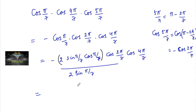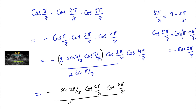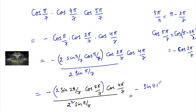Using the identity 2sinθcosθ = sin2θ, we get minus sin(2π/7) · cos(2π/7) · cos(4π/7) divided by 2 sin(π/7). Multiplying and dividing by 2 again and applying the identity once more, we get minus sin(4π/7) · cos(4π/7) divided by 2² sin(π/7).